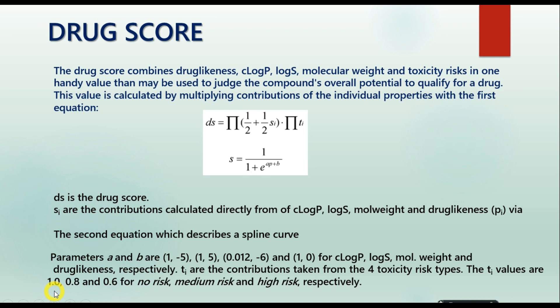If the TI value is one, there is no toxicity risk. If the TI value is 0.8, there is a medium risk. So the TI value decreases from one, the toxicity risk reaches its higher level.